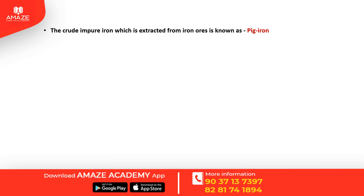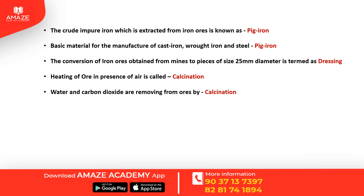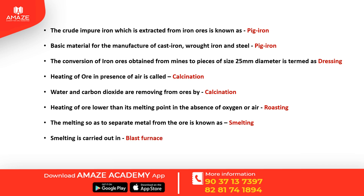Iron ore is processed to obtain pure iron. The iron ore is sized to 25 mm diameter. Dressing is carried out in the presence of air. Calcination removes water and carbon dioxide. Roasting is carried out in the absence of air. The metal is then melted, and smelting is carried out in a blast furnace.